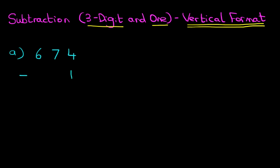674 minus 1. Let's label the columns, we don't have to but it's good practice. Units, tens and hundreds. So we are now ready to go ahead and do the subtraction.